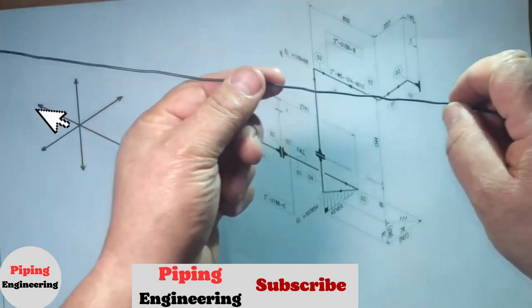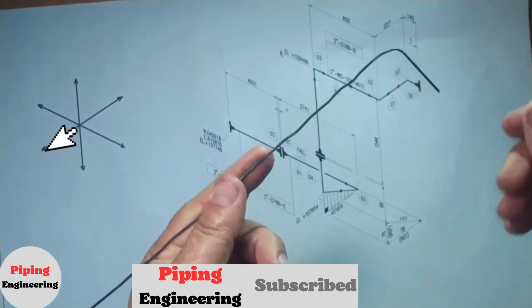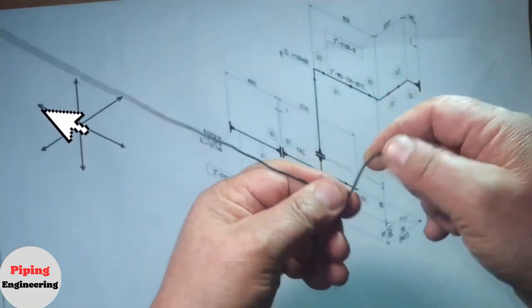We hold the wire in the north direction. Then we bend the wire in the west direction. Then we bend the wire again to the north direction.